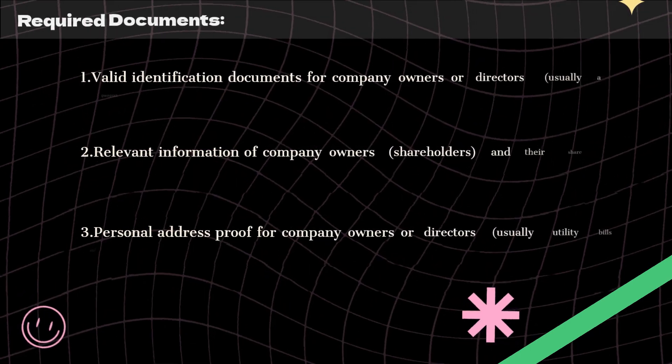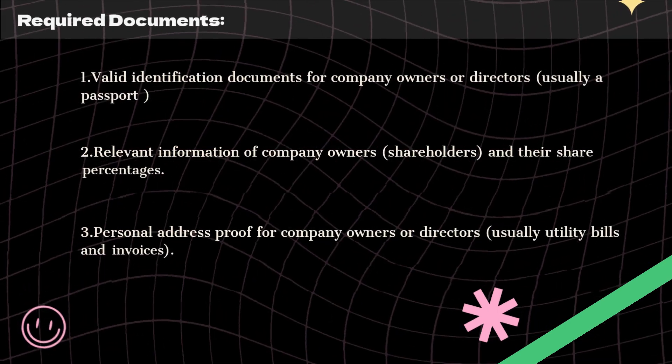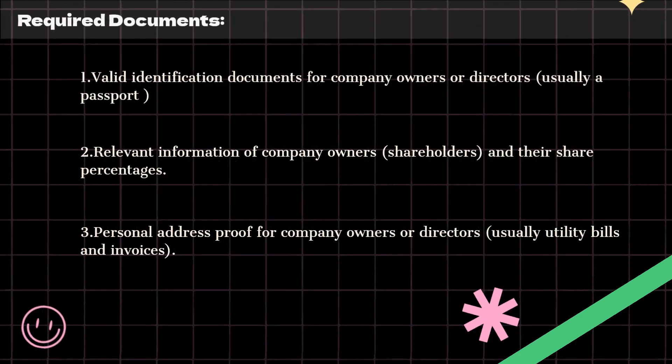Required documents. 1. Valid identification documents for company owners or directors, usually a passport. 2. Relevant information of company owners, shareholders, and their share percentages. 3. Personal address proof for company owners or directors, usually utility bills and invoices.